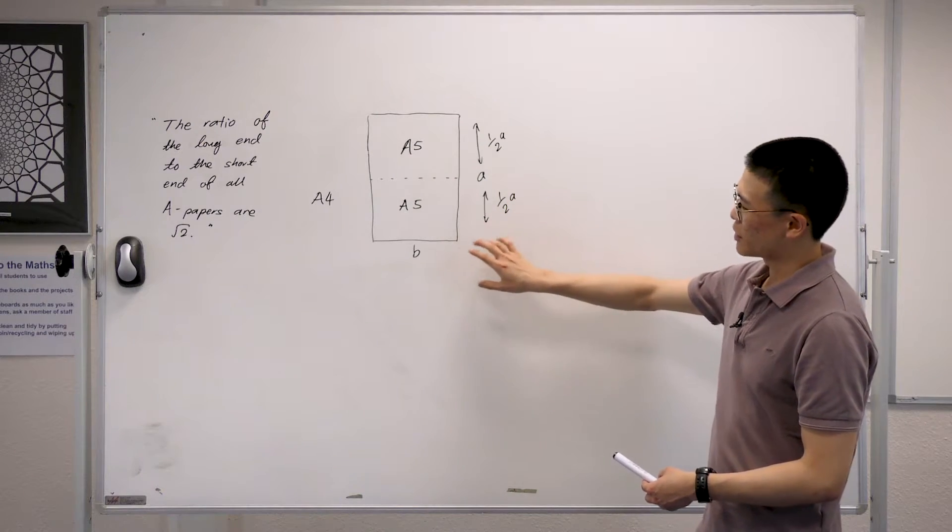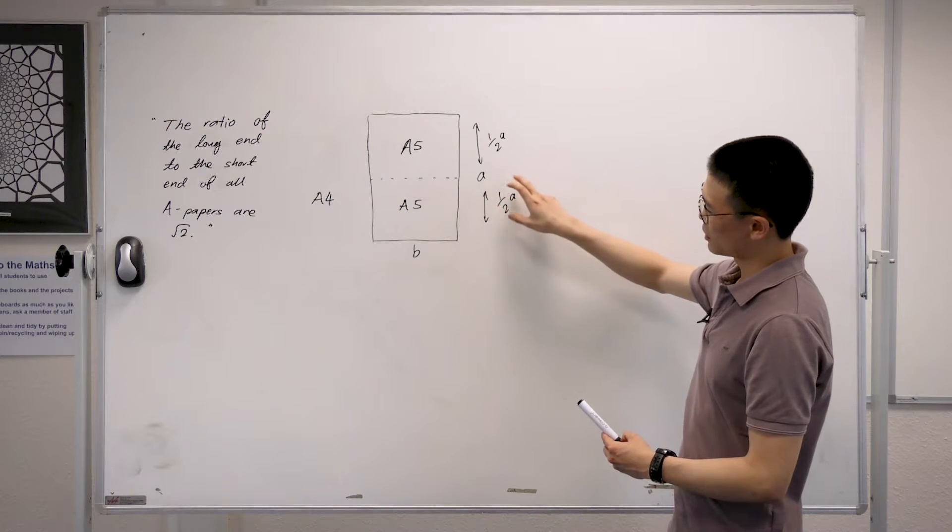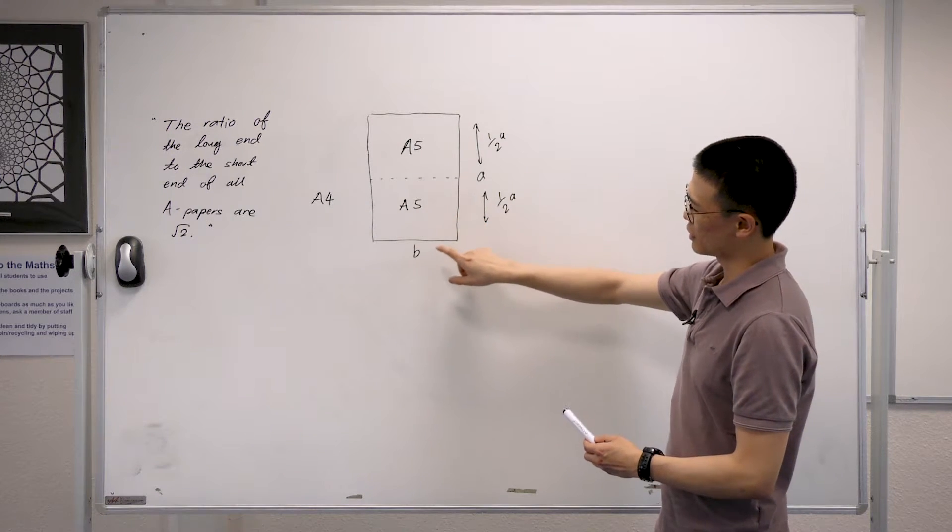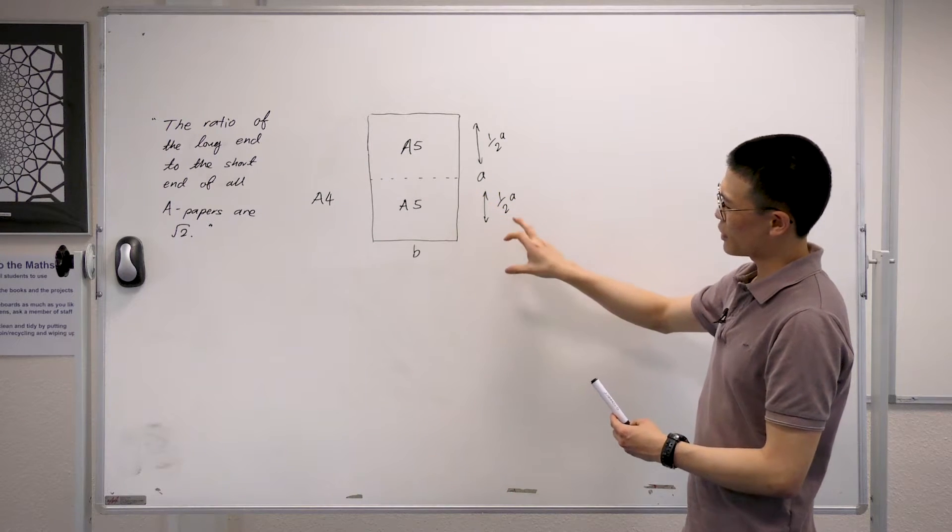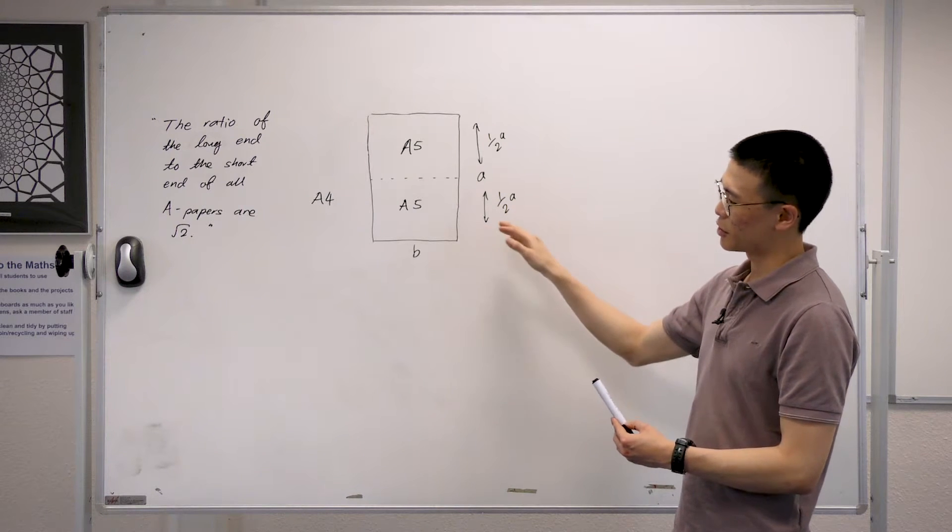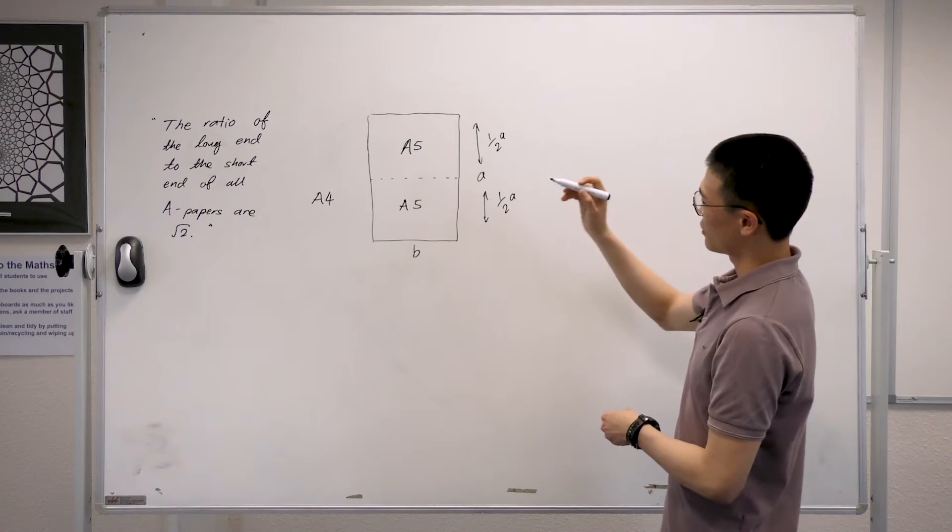So now if you look at this diagram here of the A4 and A5 sheets, we can see that we can break it up to the long end and the short end. And subsequently for the A5 sheets, you can see that this is now the long end and this is the short end. So the fact that every time we fold an A-sized paper in half, the ratios between the long and the short always stay the same.